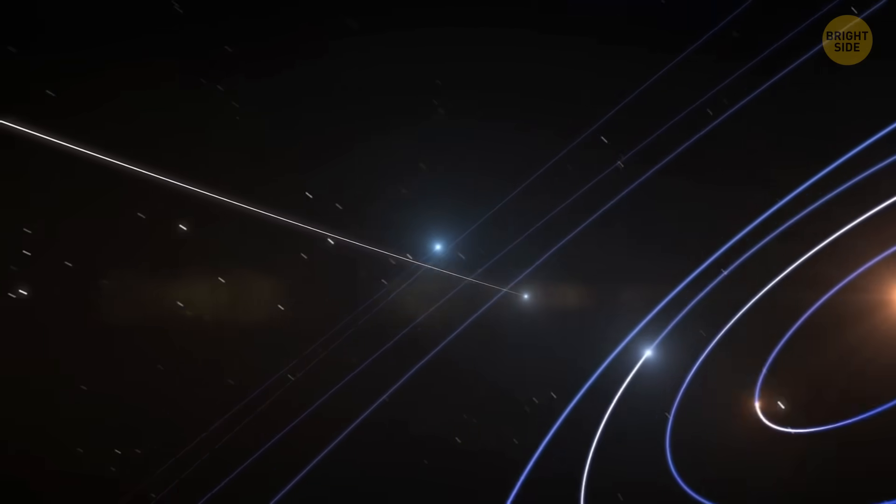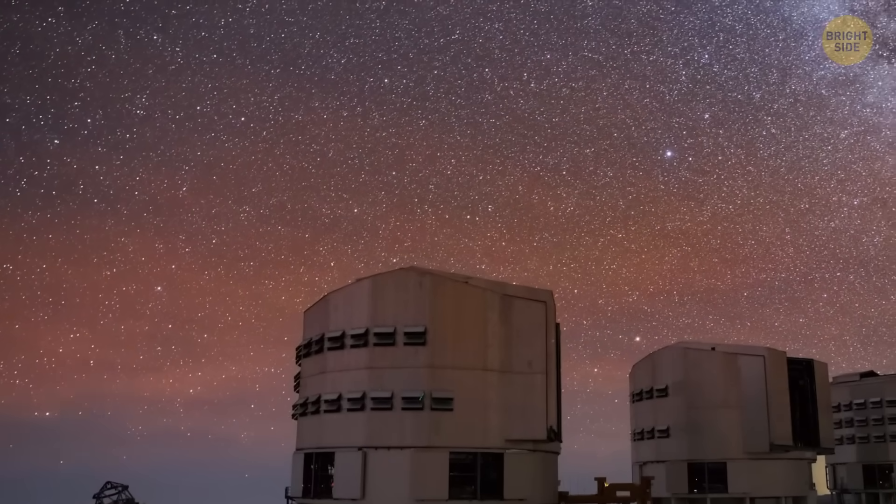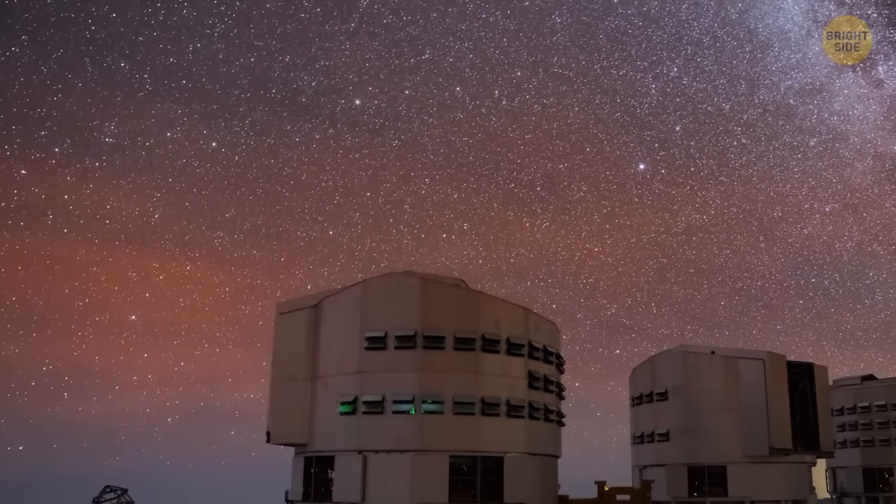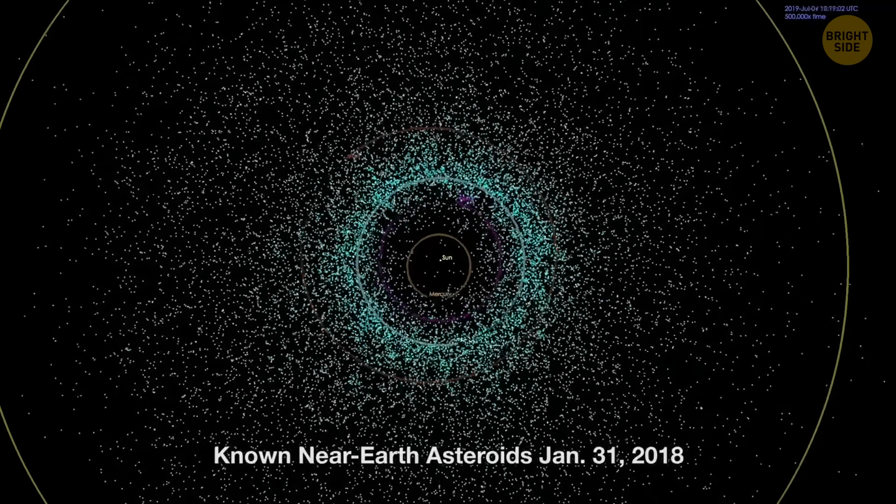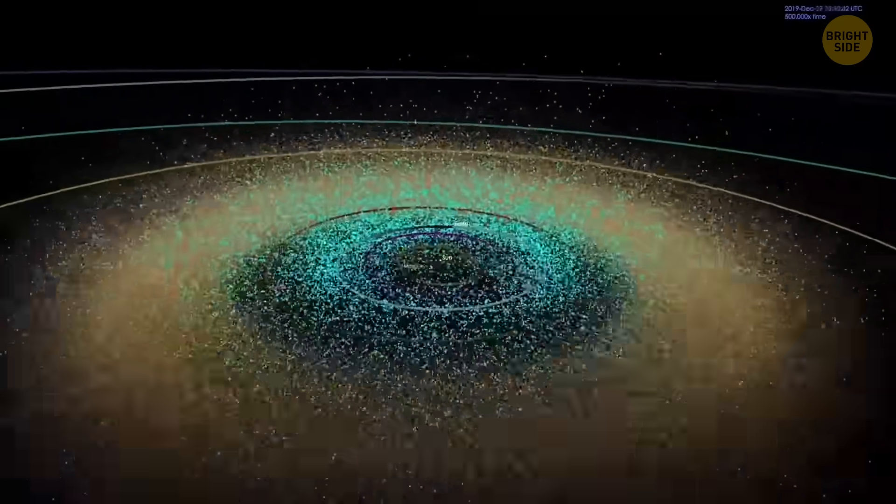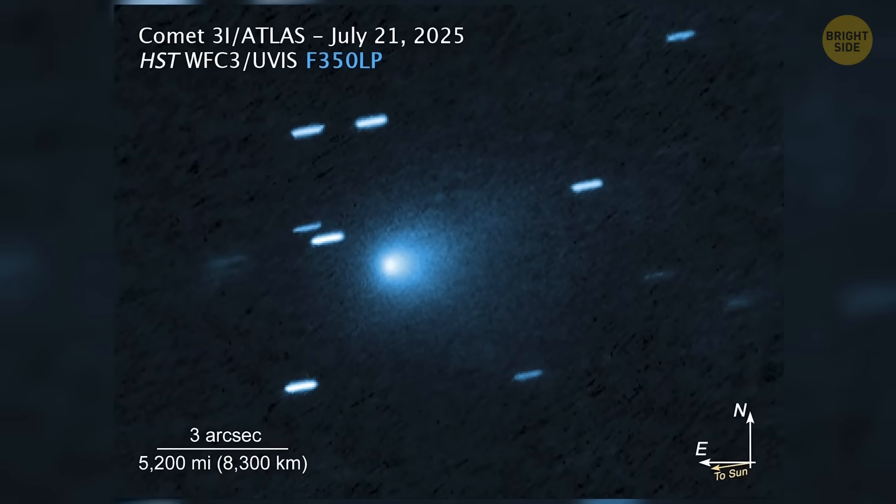Although it's harmless, tracking it has been super valuable for planetary defense. You see, space agencies are always watching asteroids and comets, running the numbers on their orbits, and making sure we'd get a warning if something ever did head our way. But 3i Atlas gave them something new to practice with.